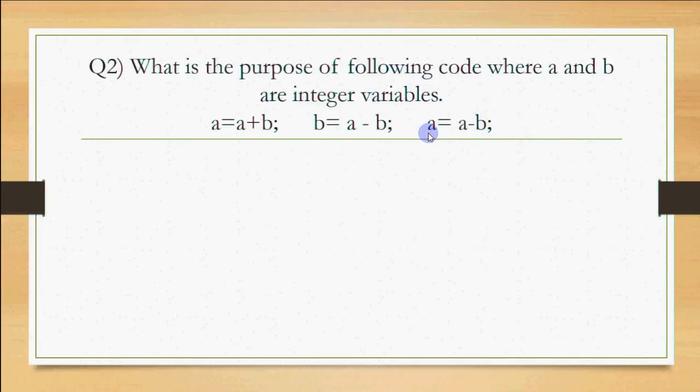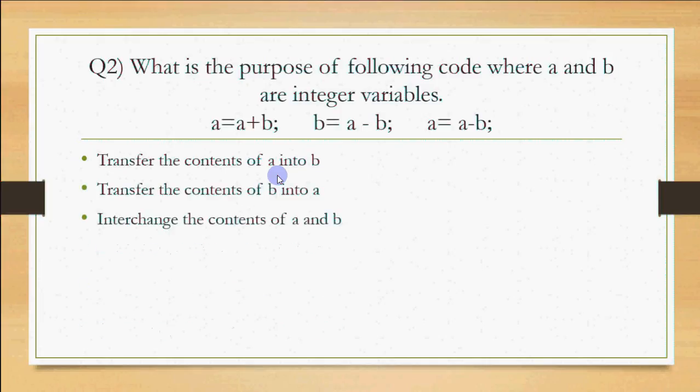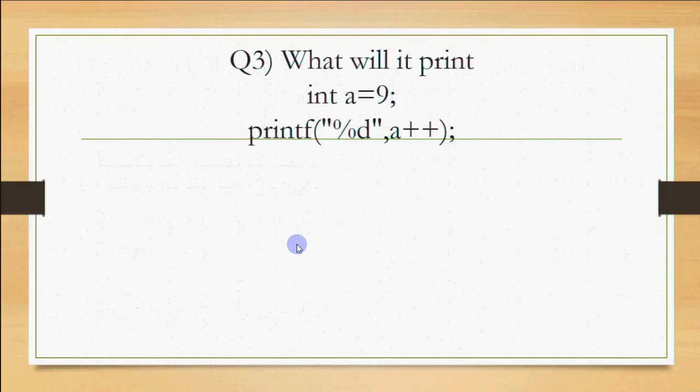If you observe, A now has the value that was B, and B has the value that was A. So our values are interchanged. A and B are swapped, that is interchanged. This is swapping of two variables without using a third variable. If you have done C properly, this program we usually do.